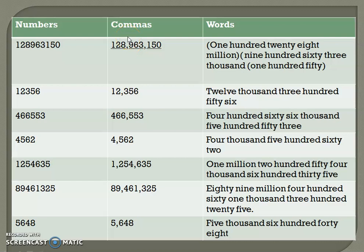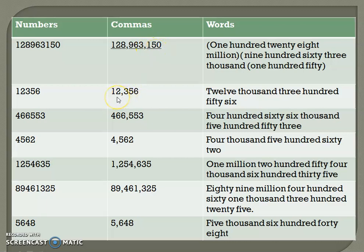You have to separate the given number from the right-hand side — before three numbers, before three numbers — and then write in words. So: 128 million — this is the millions period — one hundred twenty-eight million, nine hundred sixty-three thousand, one hundred fifty.